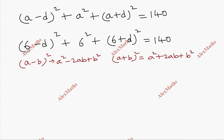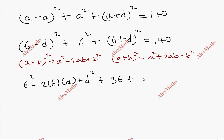Expanding (6 - d)²: 6² - 2(6)(d) + d² = 36 - 12d + d². Expanding (6 + d)²: 36 + 12d + d². Adding all terms: the -12d and +12d cancel. We get 36 + 36 = 72, plus 2d².